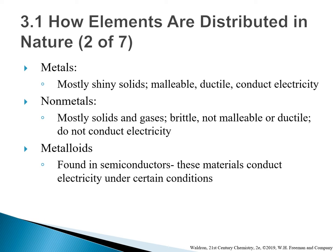Metals are mostly shining solids at room temperature. They are malleable, ductile, and good conductors of electricity and heat. Mercury is a metal that is a liquid at room temperature.